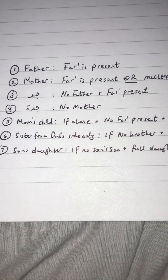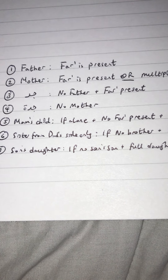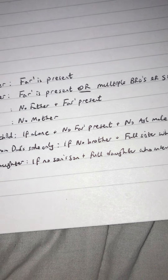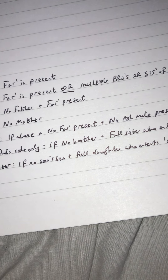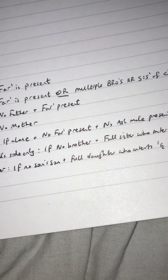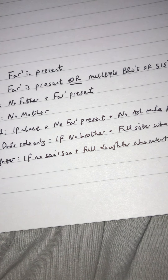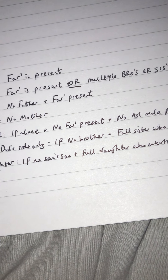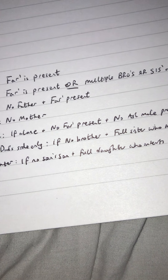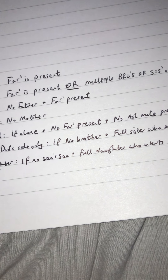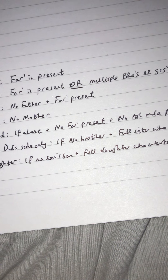Likewise for the son's daughter: if there is no mu'assib — no son's son — and in the equation there is a daughter inheriting a half, then the son's daughter will get a sixth to complete two-thirds. Meaning, combining the share of the daughter and the son's daughter gives two-thirds: a half plus a sixth equals two-thirds. Similarly, in the case of the sister from the father's side, a half plus a sixth gives two-thirds.